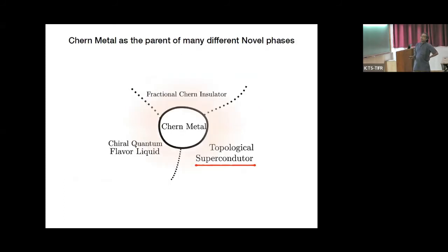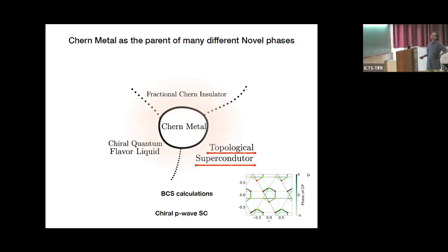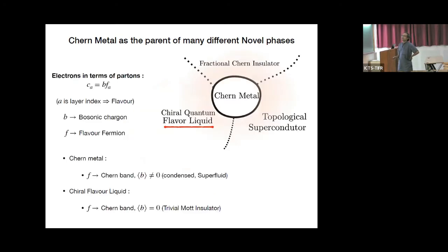Turning to the topological superconductor: one approach is to perform a BCS calculation in this flat band. The pairing symmetry naturally realized is a chiral superconductor where the phase winds by 2π going around the Brillouin zone. This yields Majorana edge modes at the edge of this topological superconductor.